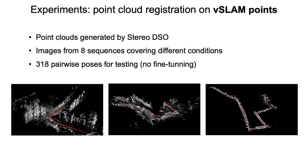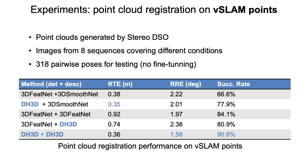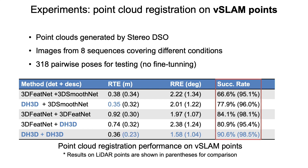Our 3D descriptor not only works on LiDAR point clouds, but also can handle other 3D data generated by different sensors. For example, direct visual SLAM methods can produce semi-dense 3D reconstructions from images. In this experiment, we use Stereo DSO to generate point clouds from 8 traversals of the Oxford RobotCar dataset. To test generalization capability, our model used here is not fine-tuned. Our approach achieves the best rotation error and success rate, and the second best translation error. Moreover, most methods show significantly inferior performance on this data, but our method is still able to achieve a favorable performance, showing the least degree of degradation.